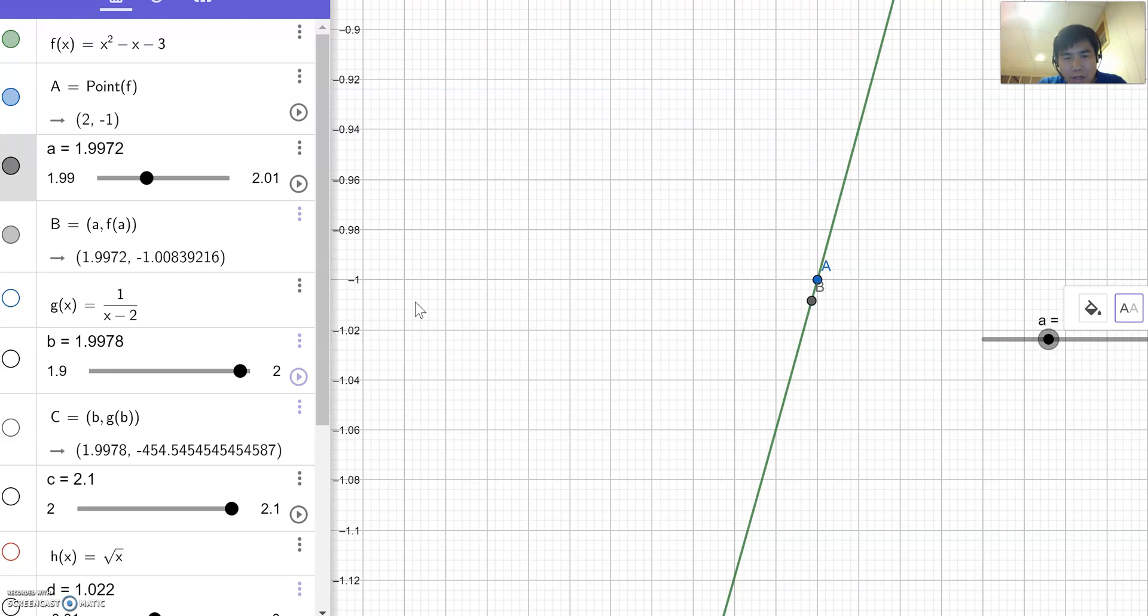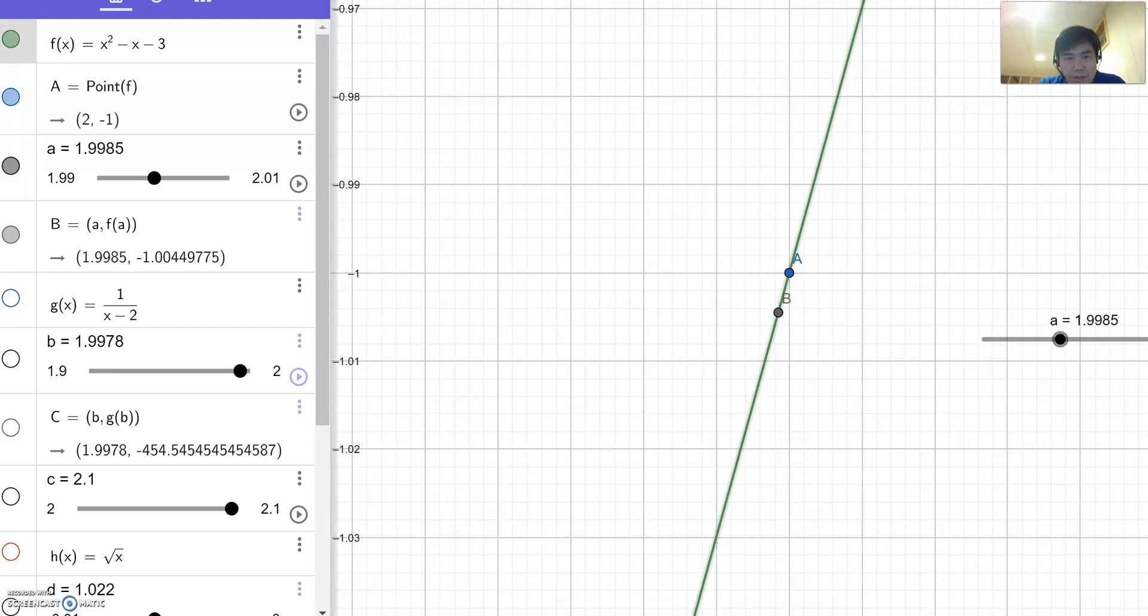Now I go more then it is even closer to negative one. Okay do you see that. Now points are really close to each other. Okay now I'm gonna make a little more zoom in so you can see better.